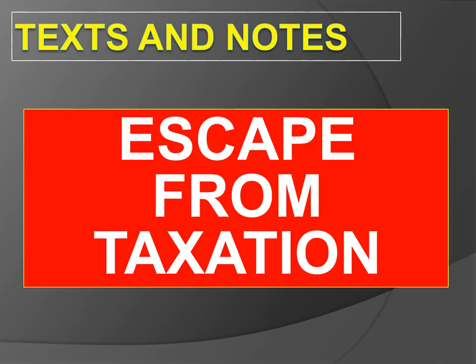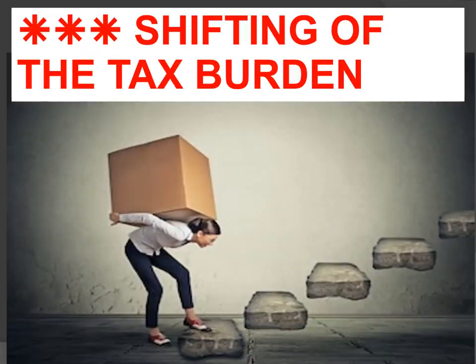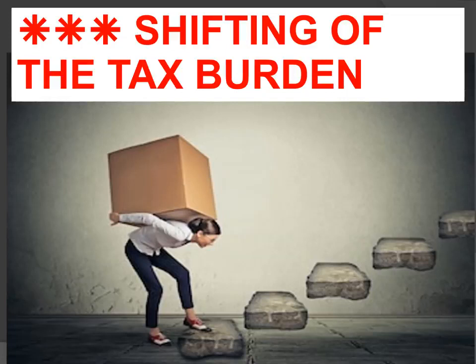Another part of the bar coverage is escape from taxation. What are the ways of escaping taxation? This is a bit popular, so we'll have to discuss this in detail — this is part of my forecast for the coming bar. You have shifting of the tax burden, and then tax avoidance and tax evasion. Shifting of tax burden is a three-star area — very popular. You learned earlier about the different kinds of taxes according to tax burden or incidence: direct tax and indirect tax. Direct tax could not be the subject of shifting, but indirect tax could be.